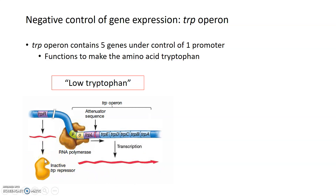This is because there's a trp repressor gene whose product is not bound to the operator — not in the way — so RNA polymerase can do its thing and make all of these tryptophan biosynthesis genes.